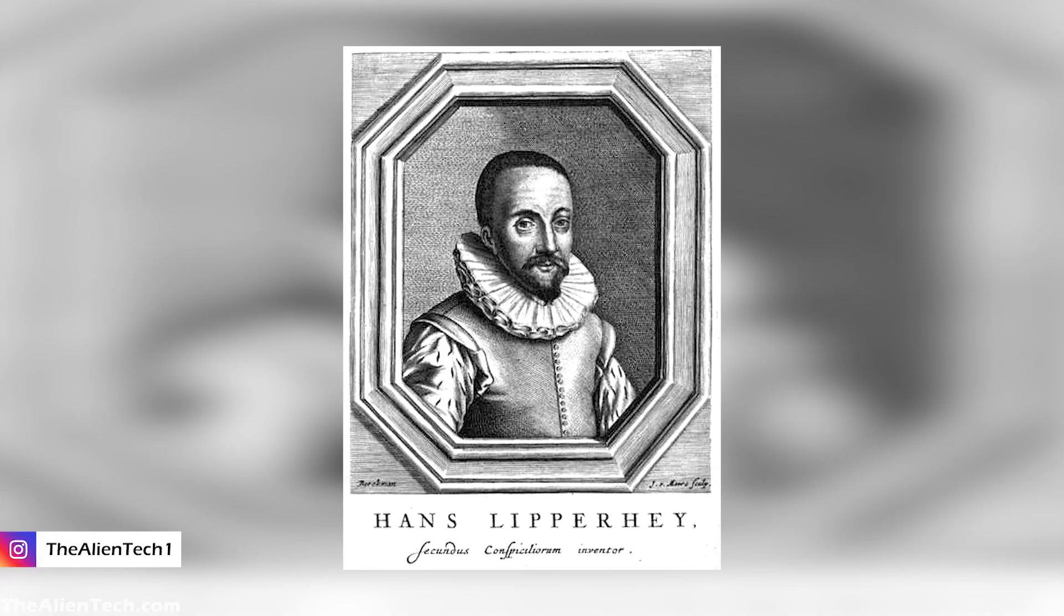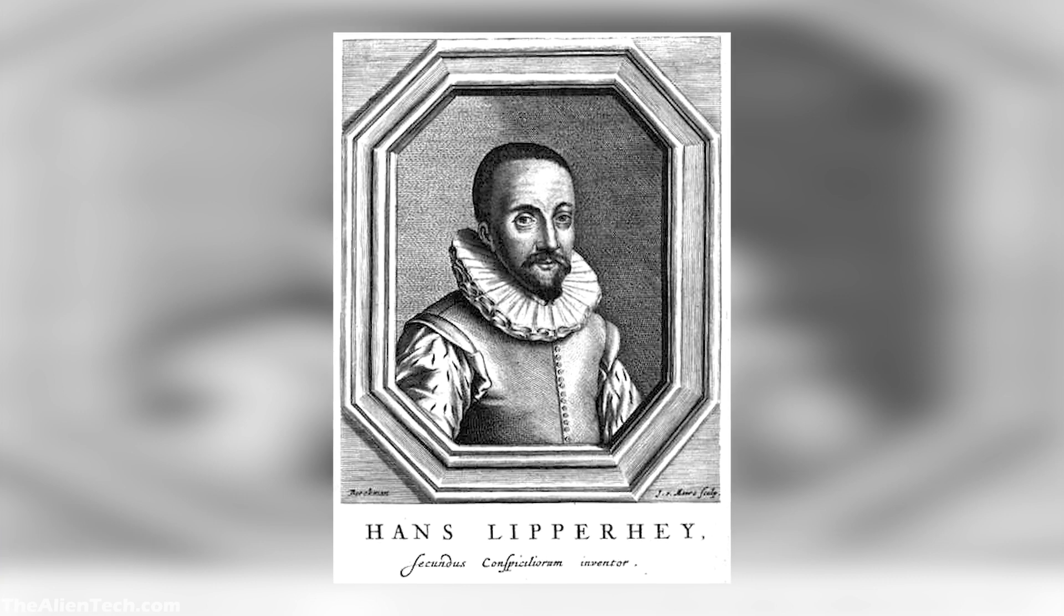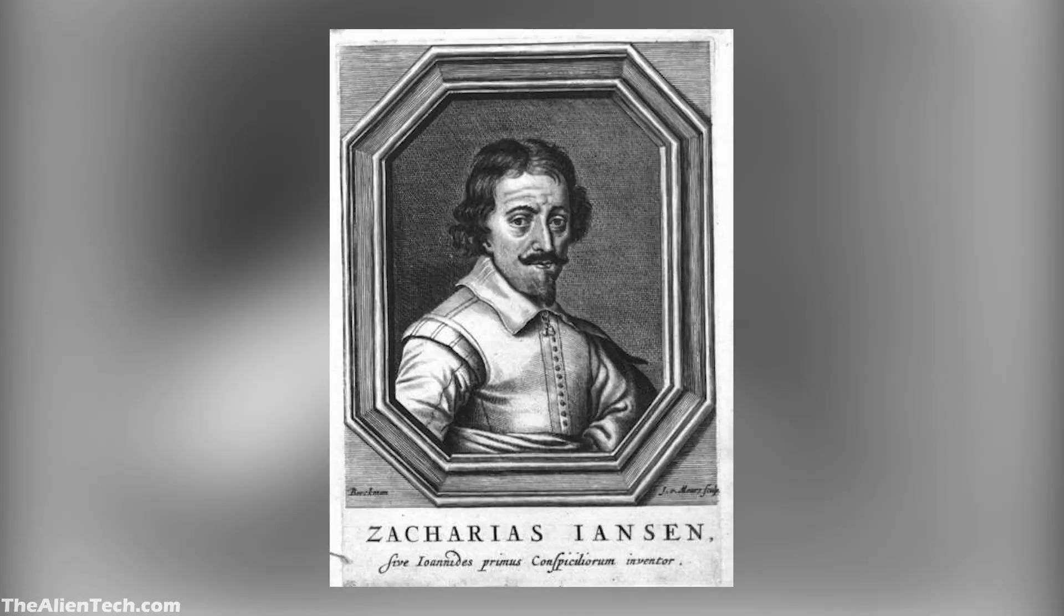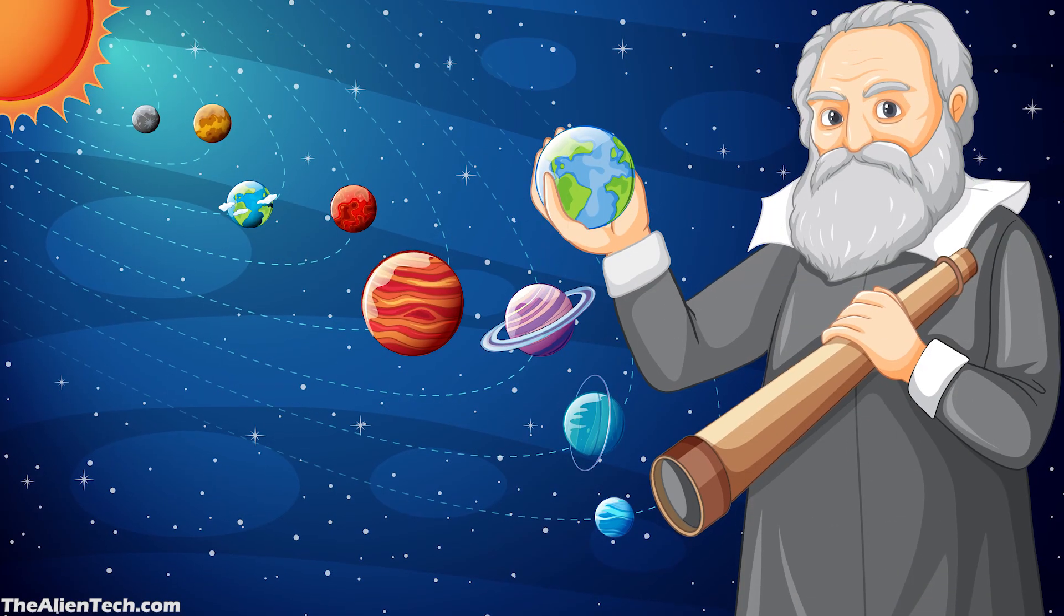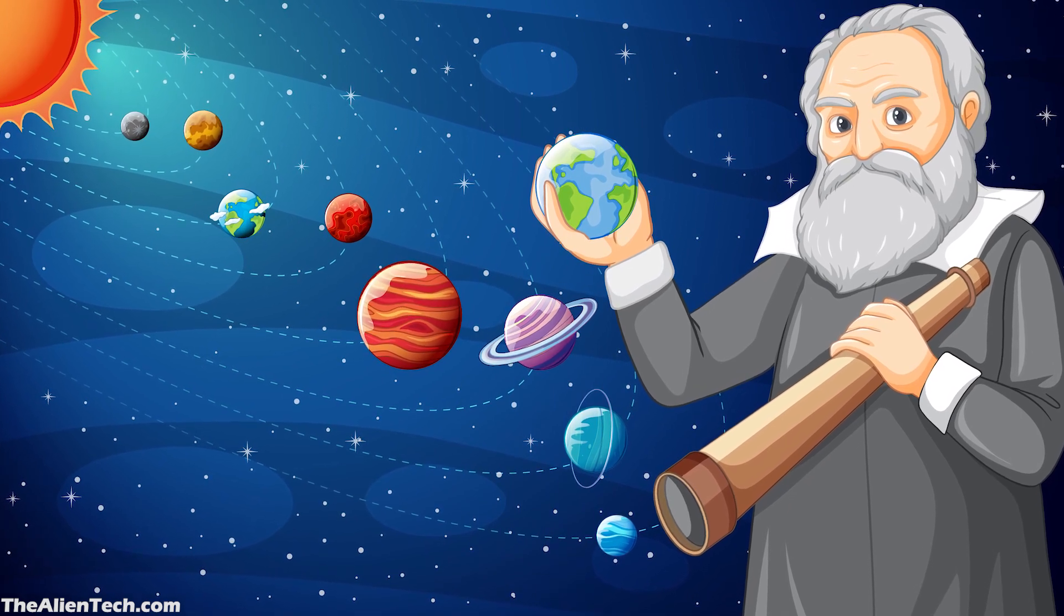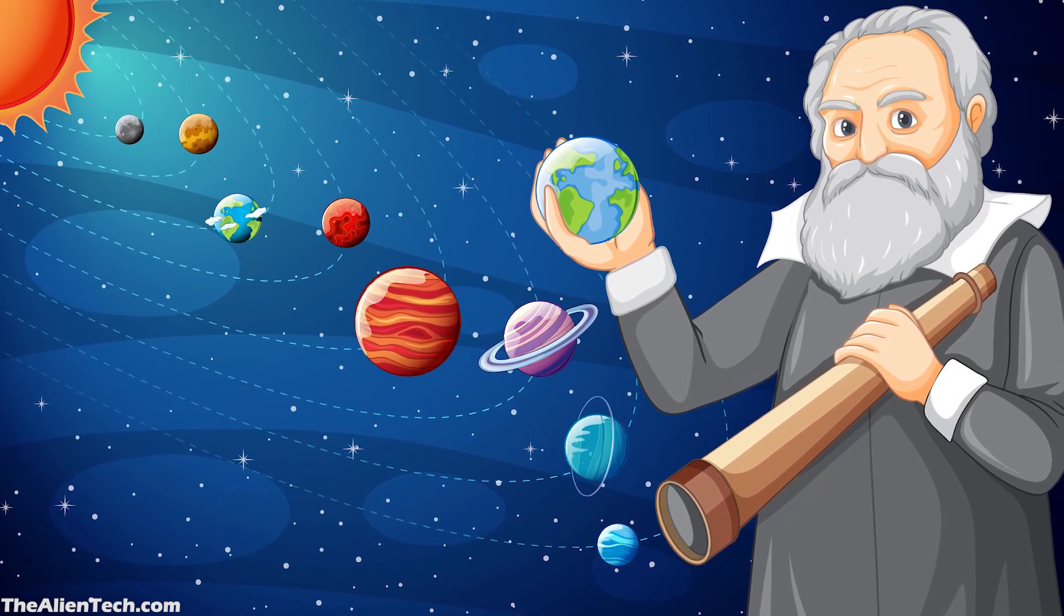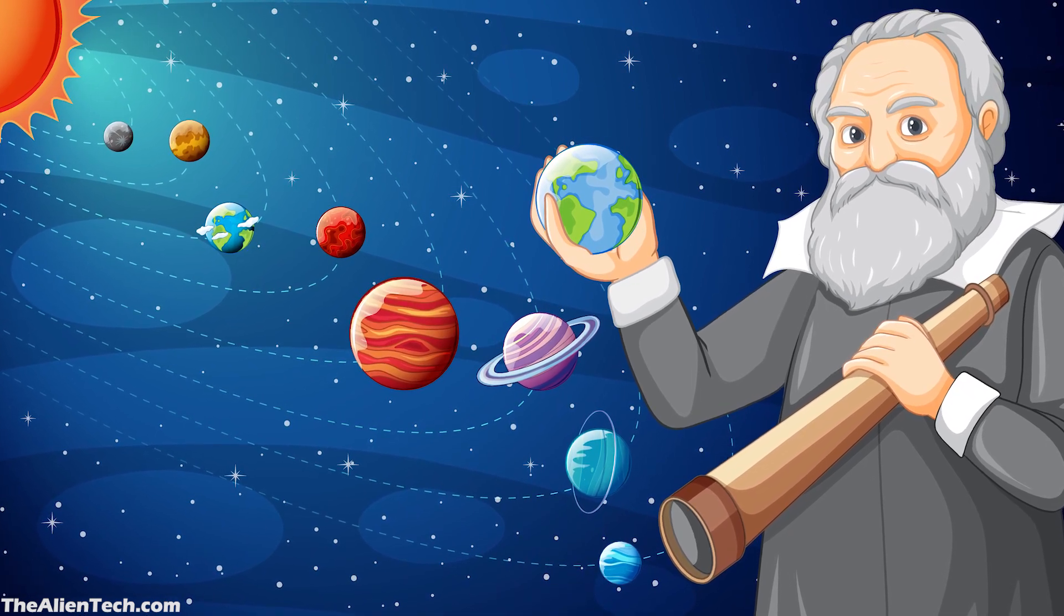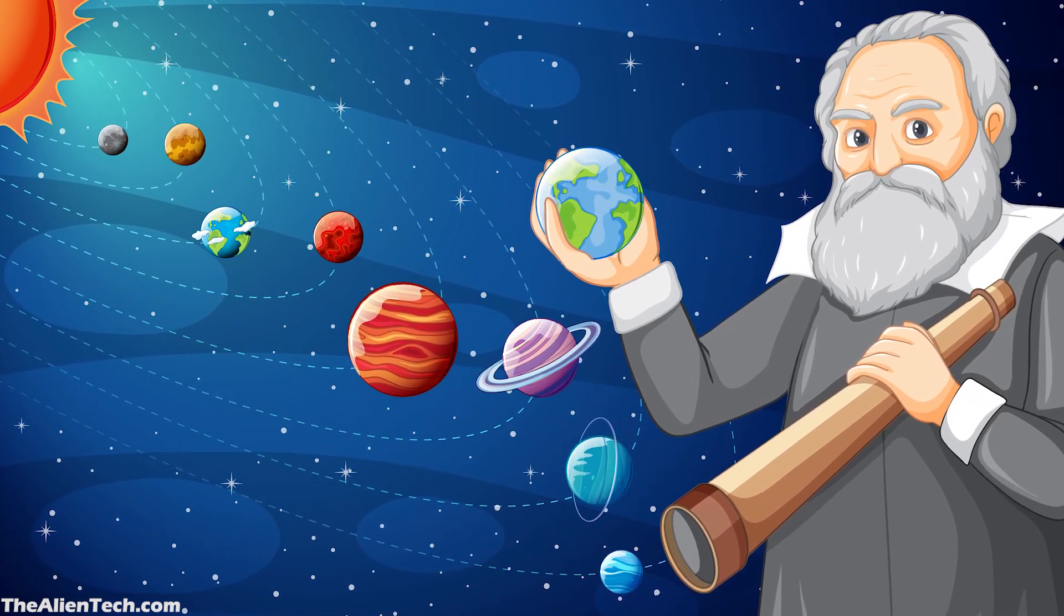The first telescope magnified the image three times. Lippershey was the first one to apply for the patent of the telescope. After Lippershey applied, two other lens makers, Janssen and Mateus, applied for the patent. Their application was rejected. When Galileo heard about the instrument, he used that instrument to point it towards the sky to look at objects through it. So Galileo was the first one to do so. Maybe because of this, he gets credit for inventing the telescope.